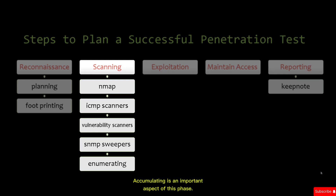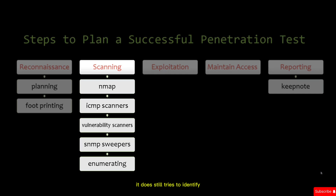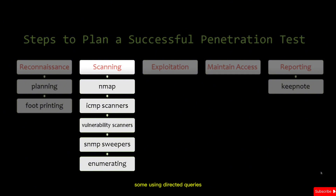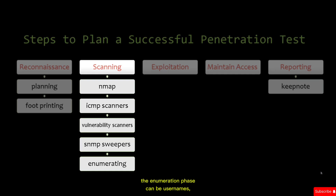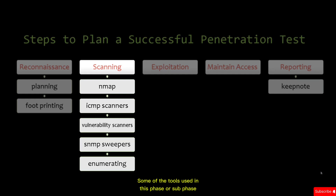Enumeration is an important aspect of the scanning phase. The goal of enumeration is to paint a fairly complete picture of the target. A tester tries to identify valid user accounts or poorly protected resource shares using directed queries or active connections to the target. The type of information sought during enumeration includes usernames, groups, network resources, shares, and applications.